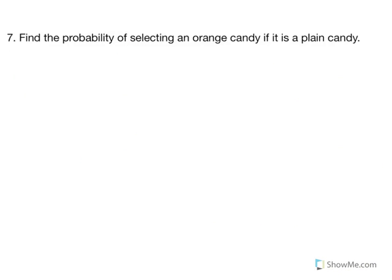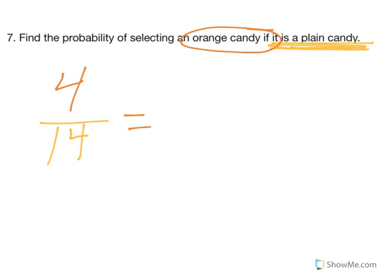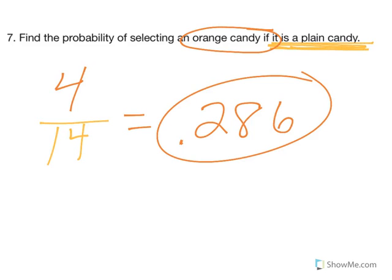And number seven, find the probability of selecting an orange candy if it is a plain candy. So again, I've got if it's plain. Plain means 14, 14 on the bottom. So then on the top, orange. Looking only at the plain column, I've got four orange candies out of the 14 plain. So four out of 14 gives me a 0.286 probability.